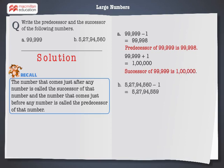Next, to find the predecessor of 5,27,94,560, subtract 1 from it. We get 5,27,94,559. Hence, the predecessor of 5,27,94,560 is 5,27,94,559.